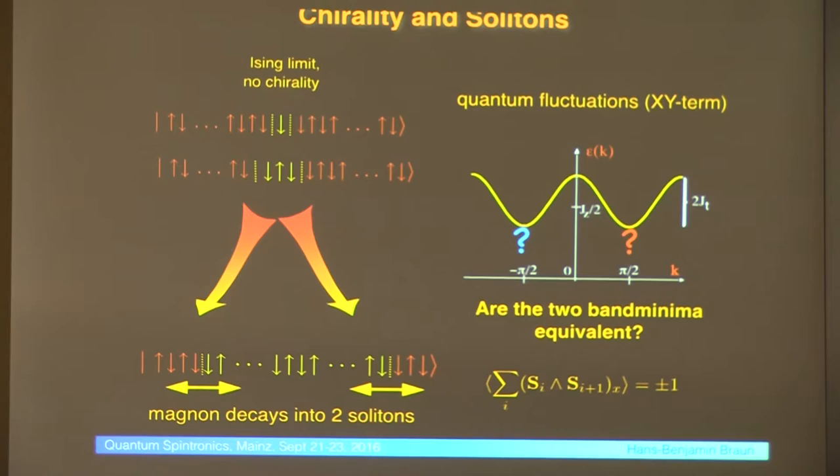This is sort of a K-dependent generalization of the Kramers theorem, you have a degeneracy. I think Daniel showed it with a triangle, this is sort of most elementary manifestation on a triangle, you can have the two chiral states which are degenerate.